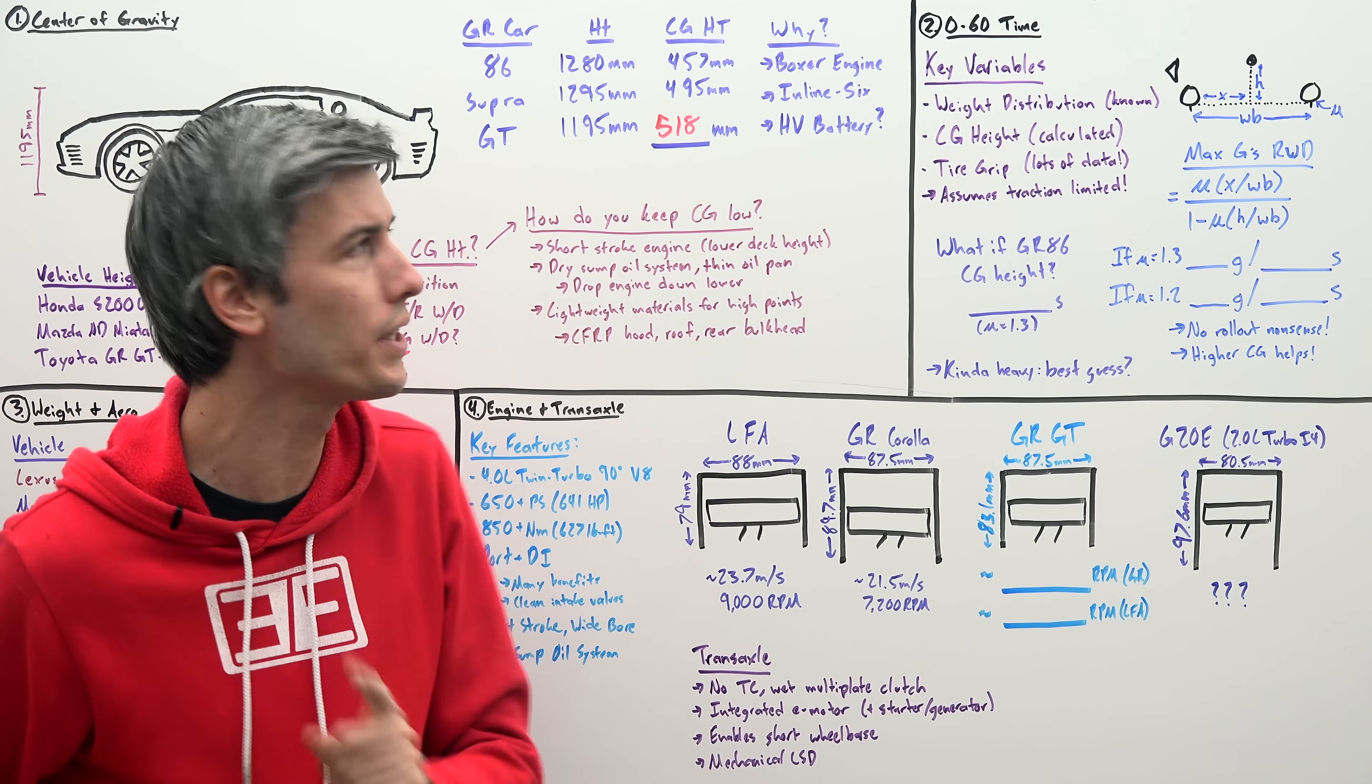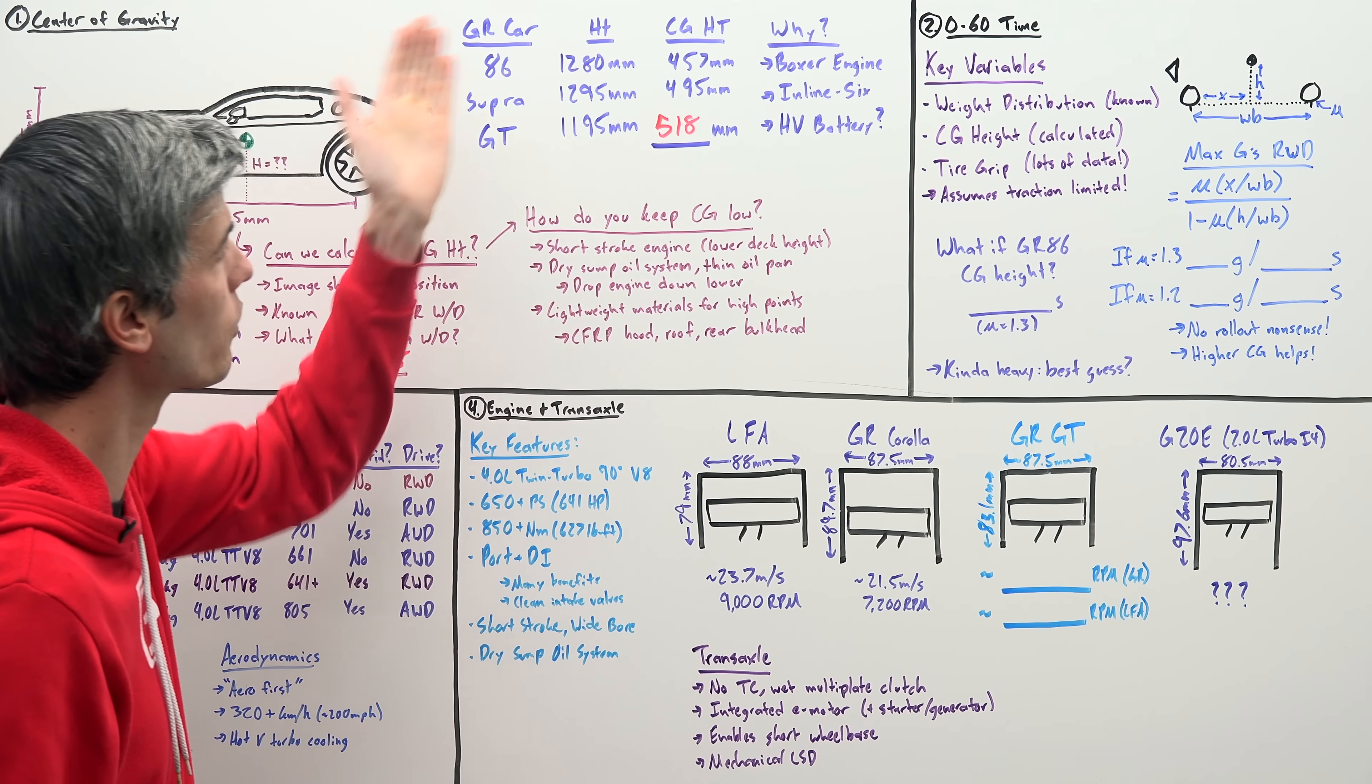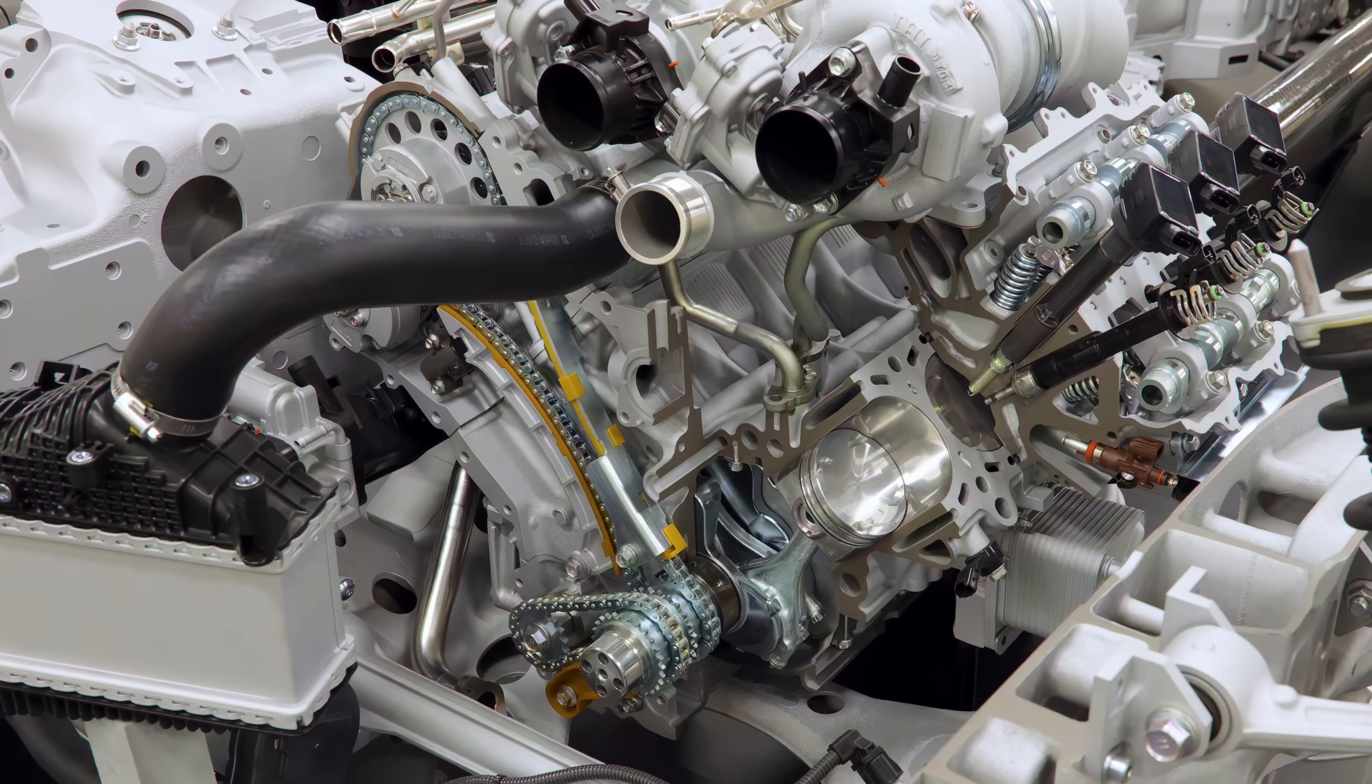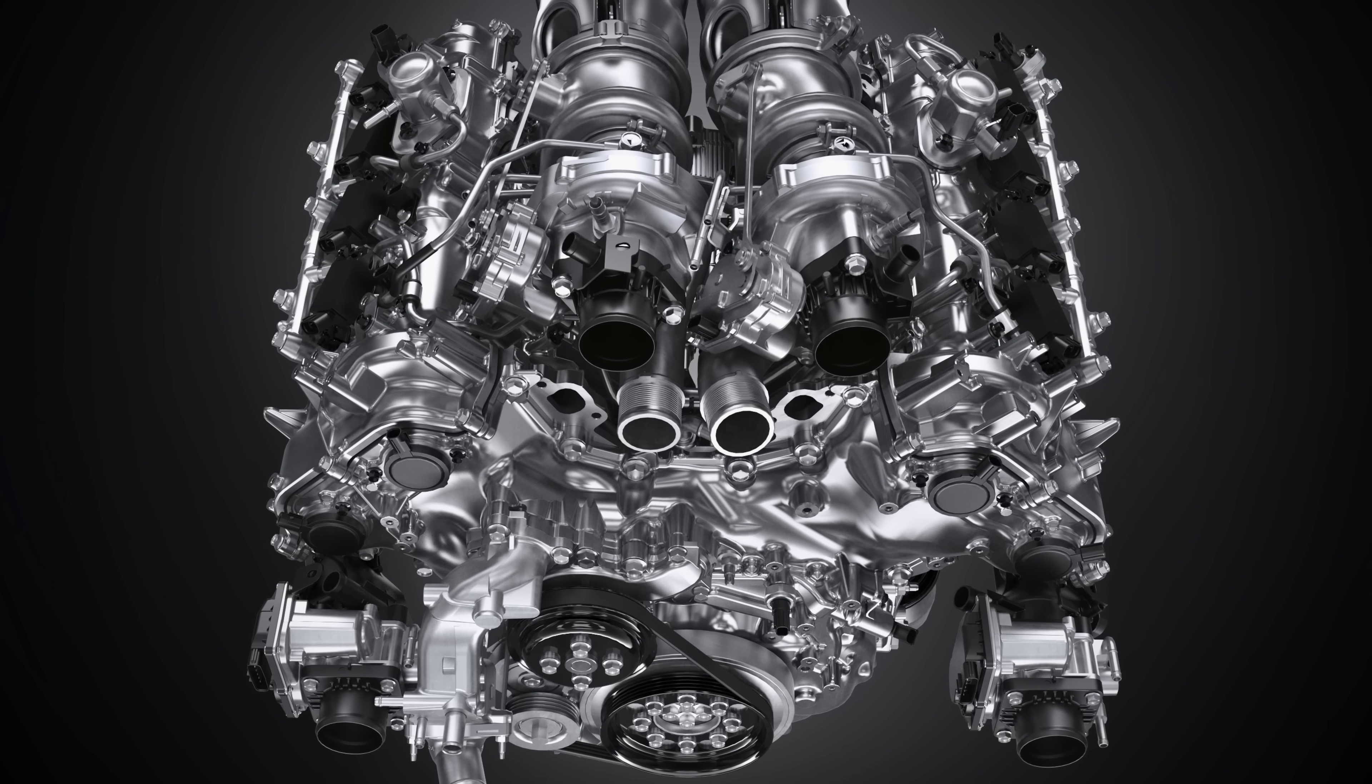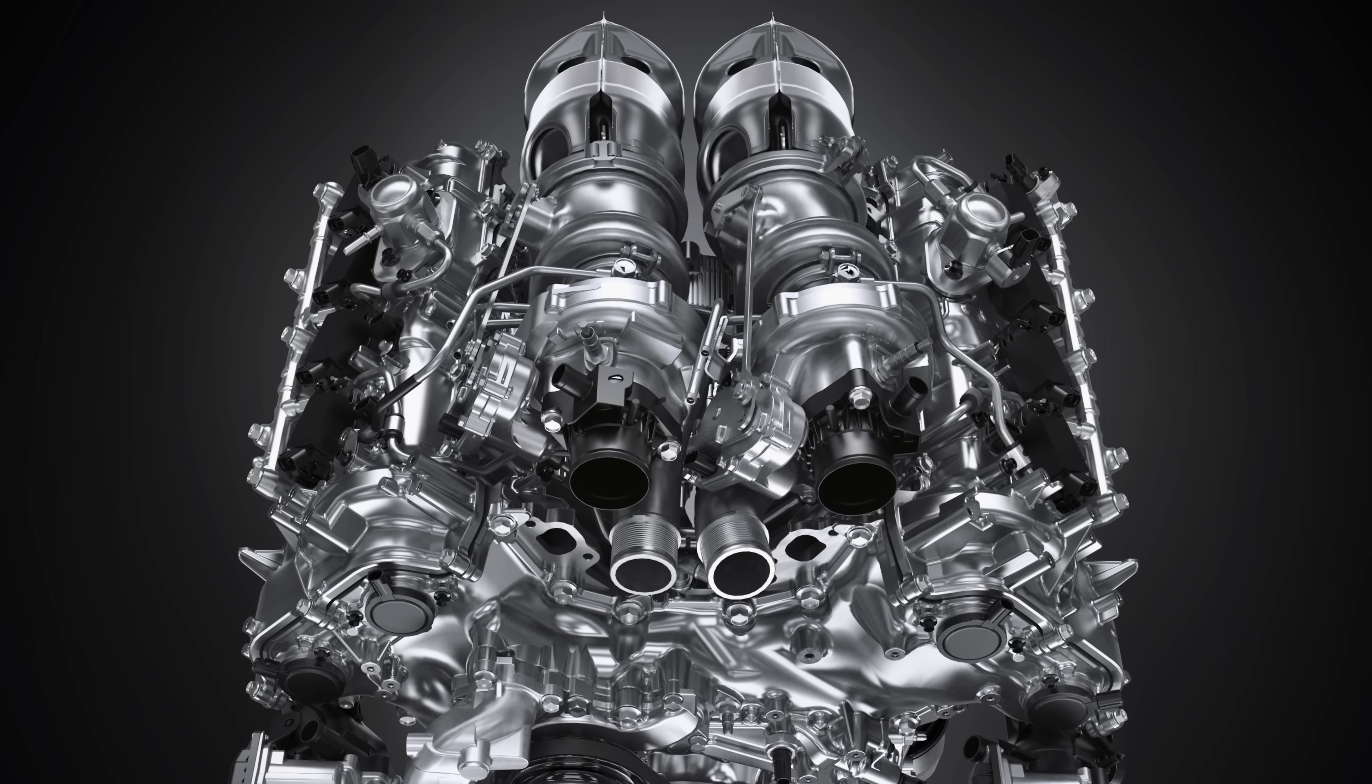Well, I think there are some logical reasons why this could be accurate. First of all, starting off with the GR86. This of course has a boxer engine, right? So a very low, very flat engine. The GR GT has a 90 degree V8. So the CG of this engine is much higher. It also has a hot V setup. So you've got the heavy turbos and exhaust components mounted high on the engine.